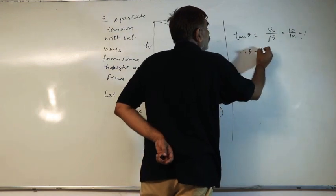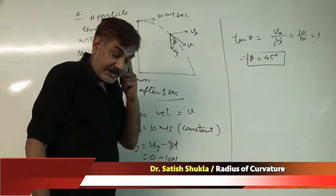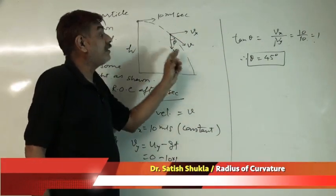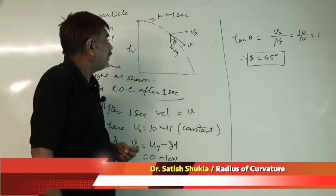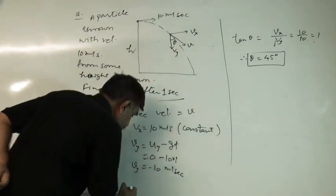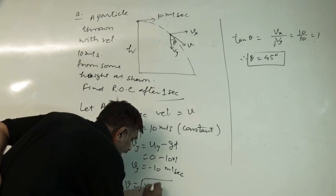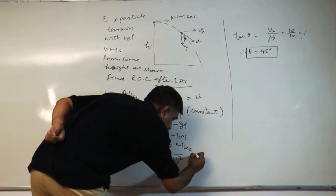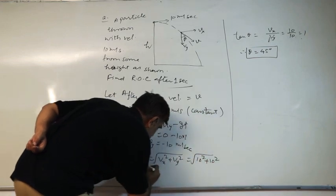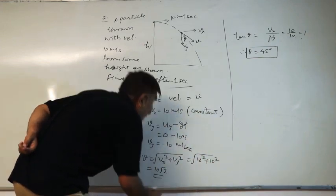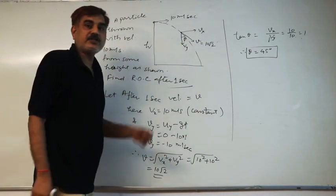The angle θ: tan θ = vy/vx = 10/10 = 1, so θ = 45°. After 1 second, the projectile makes a 45° angle with the horizontal. The magnitude of velocity is V = √(vx² + vy²) = √(10² + 10²) = 10√2 m/s.